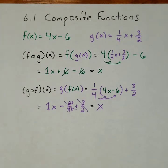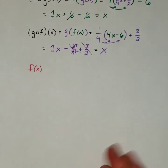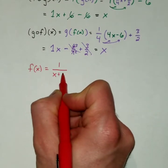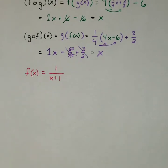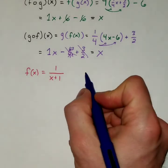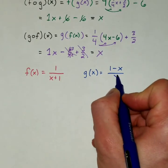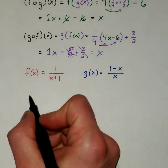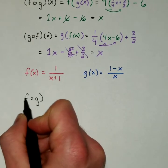Let's do one more example. Let's take our f of x function: f of x is now going to equal 1 over x plus 1. And let's let g of x equal 1 minus x over x. If we were to compose them again, let's do this with f composed with g of x.